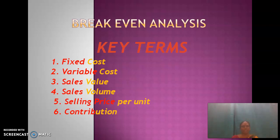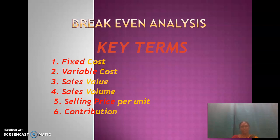Variable cost, as per the name, varies according to production and sales. When there is an increase or decrease in sales or production, variable cost also increases or decreases. The next term is sales value — the sales amount in rupees. Sales volume refers to sales units. Selling price per unit is what the product sells for per unit. Contribution is the difference between selling price and variable cost — that is, selling price per unit minus variable cost per unit.